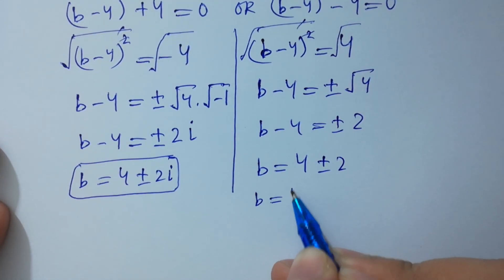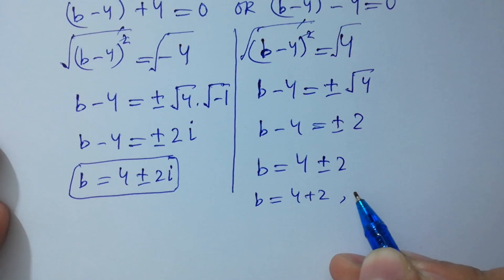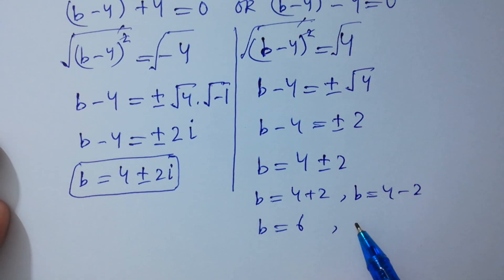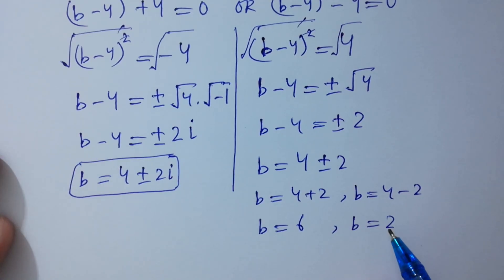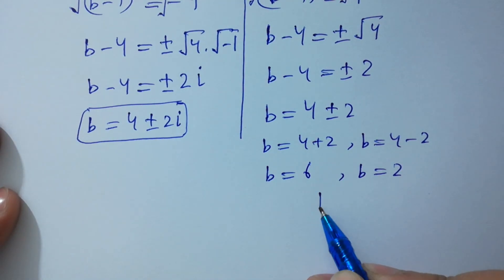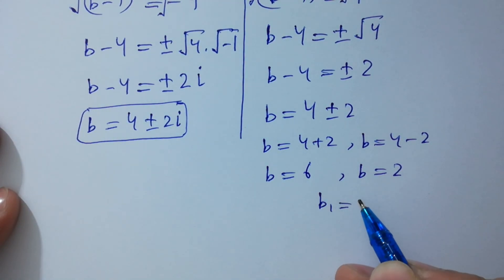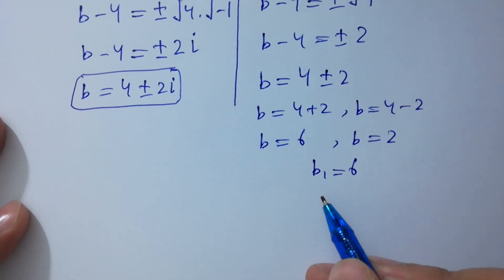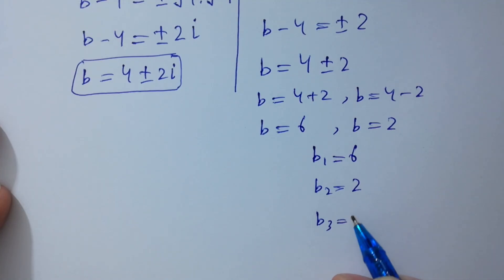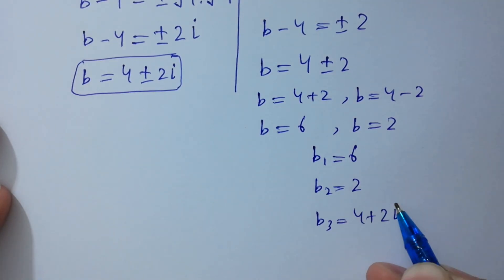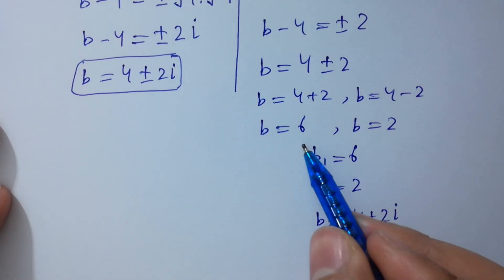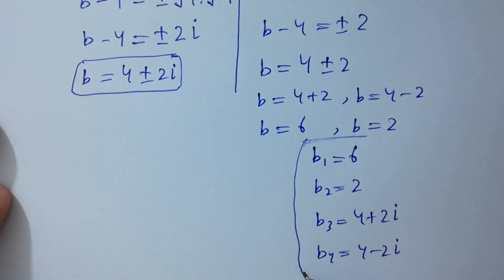So b is either 4+2=6 or 4−2=2. The four solutions are: b₁ = 6, b₂ = 2, b₃ = 4+2i, and b₄ = 4−2i. So it has four solutions.